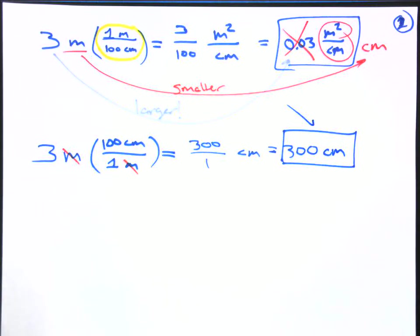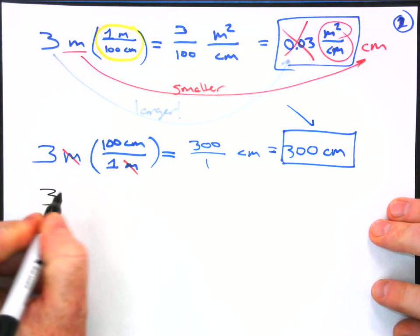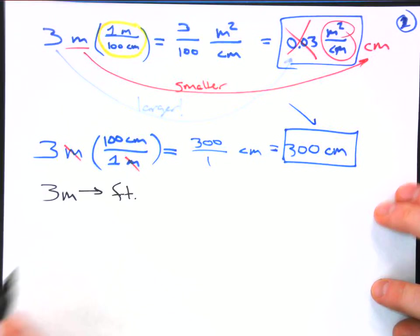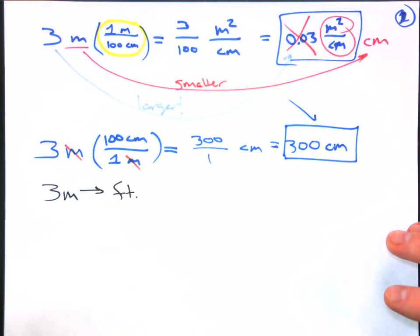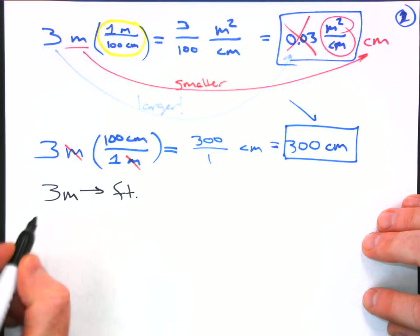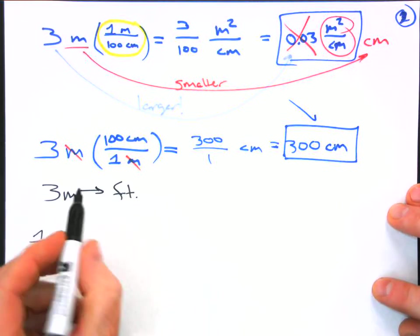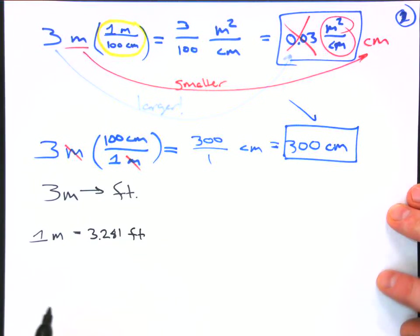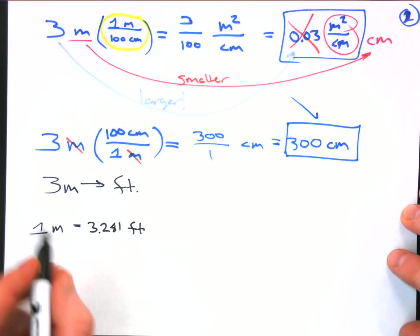All right. Well, what if the problem isn't quite so straightforward? For example, your physics teacher says, I don't want that in centimeters, I want that in feet. So now you have to again go to that ratio that equals one. Well, the ratio is going to be coming from one meter equals 3.281 feet. That's just something you look up. So let's turn this into a ratio.